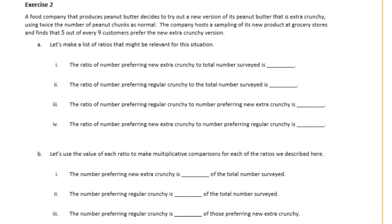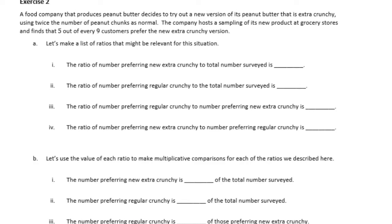Exercise 2: a food company producing peanut butter tries a new extra crunchy version using twice the number of peanut chunks. At grocery store sampling, five out of every nine customers prefer the new extra crunchy version. Part A — let's list relevant ratios. First, the ratio of customers preferring new extra crunchy to the total is five to nine.